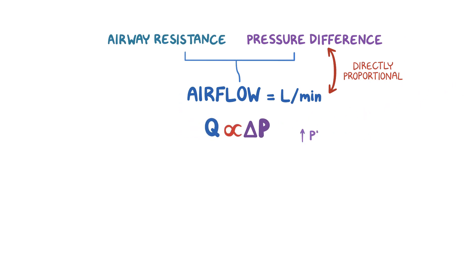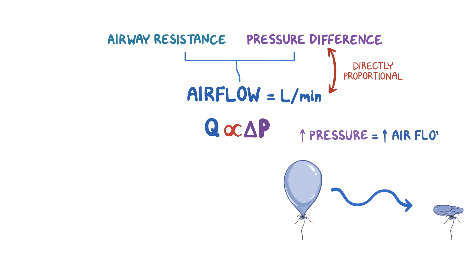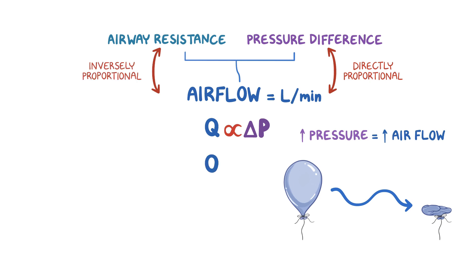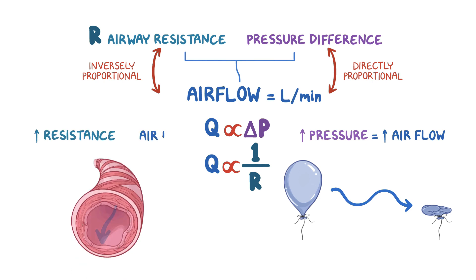This means that the higher the pressure difference between two sites, the more air flowing between them. On the other hand, the relationship between airflow and airway resistance is inversely proportional, represented as 1/R, where R is airway resistance — meaning if airway resistance increases, airflow decreases.